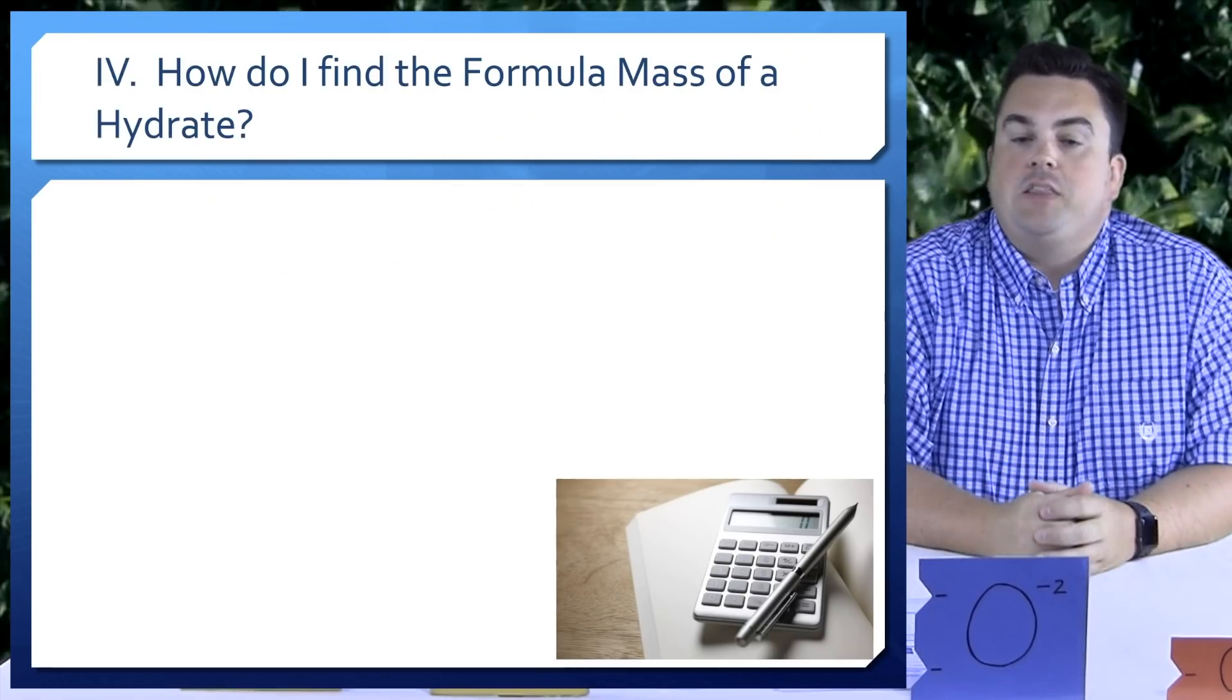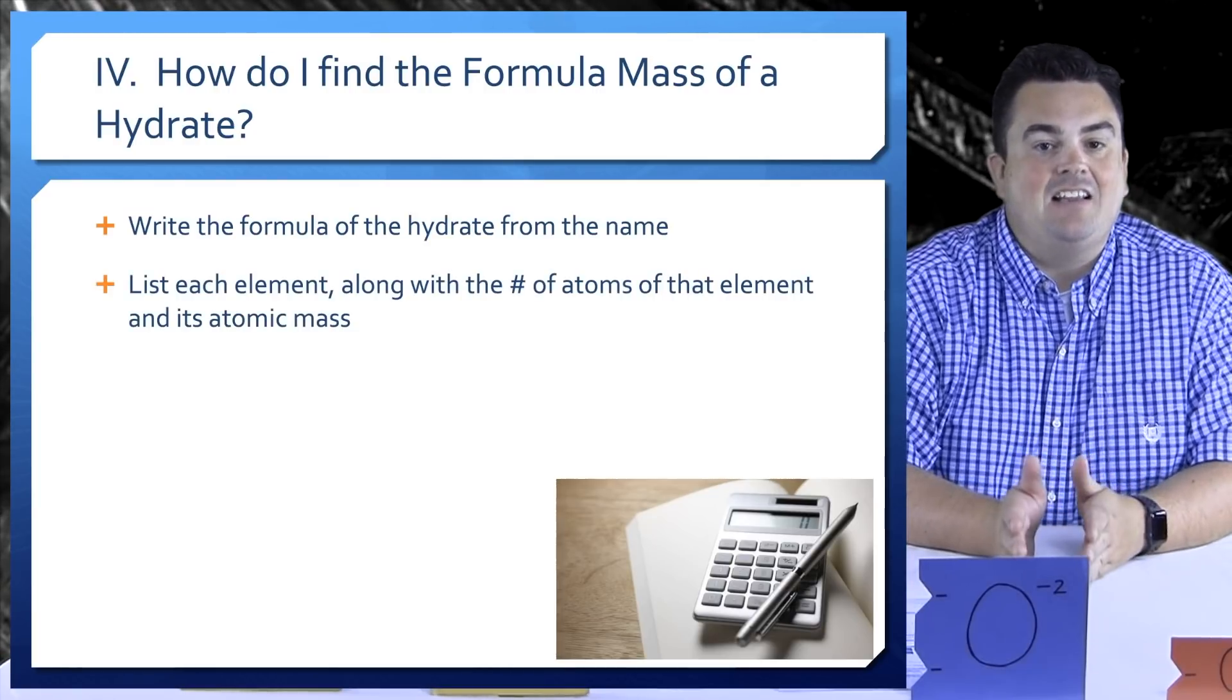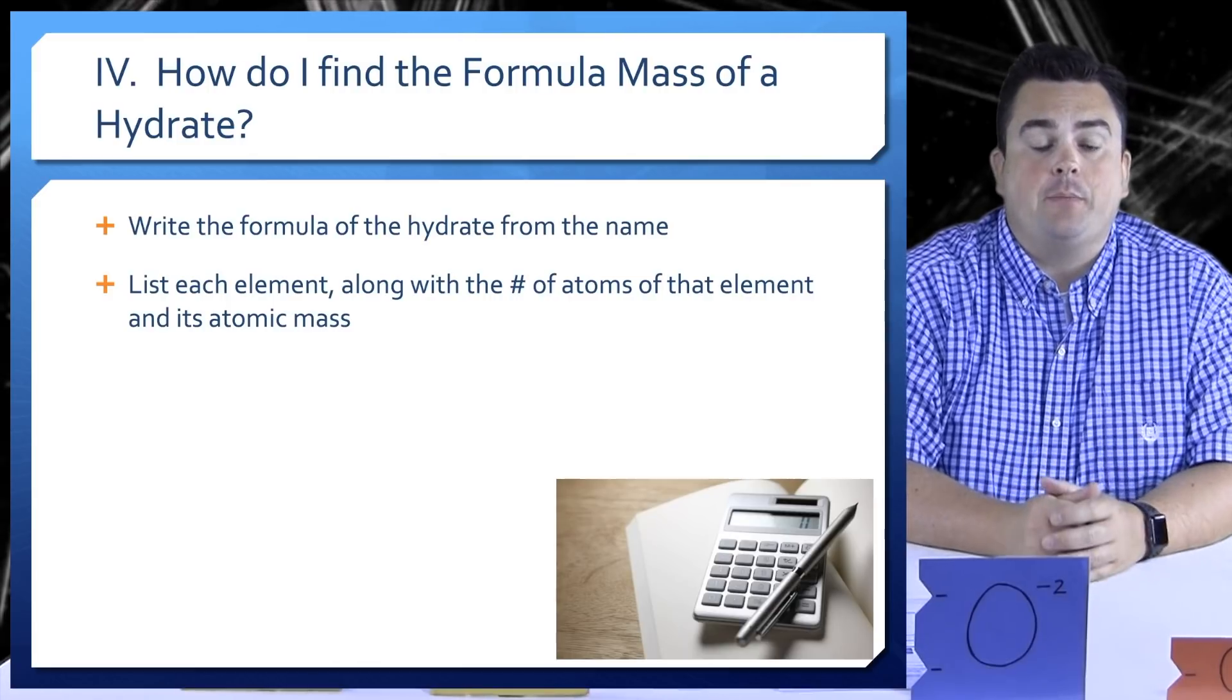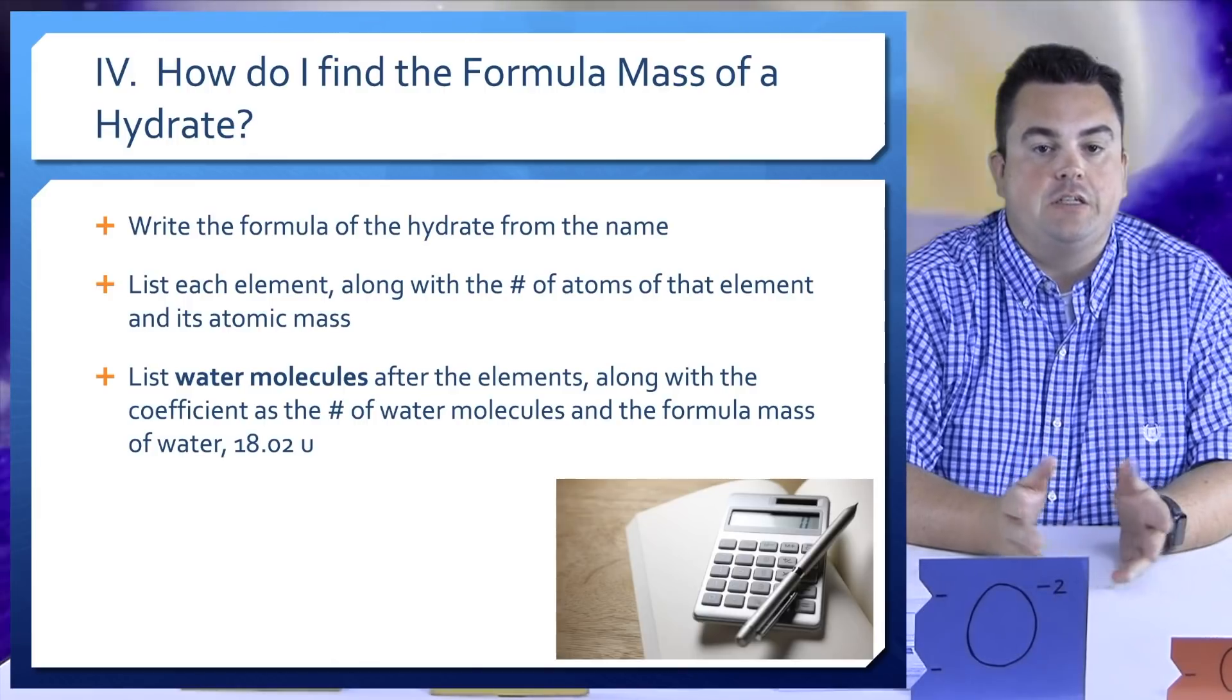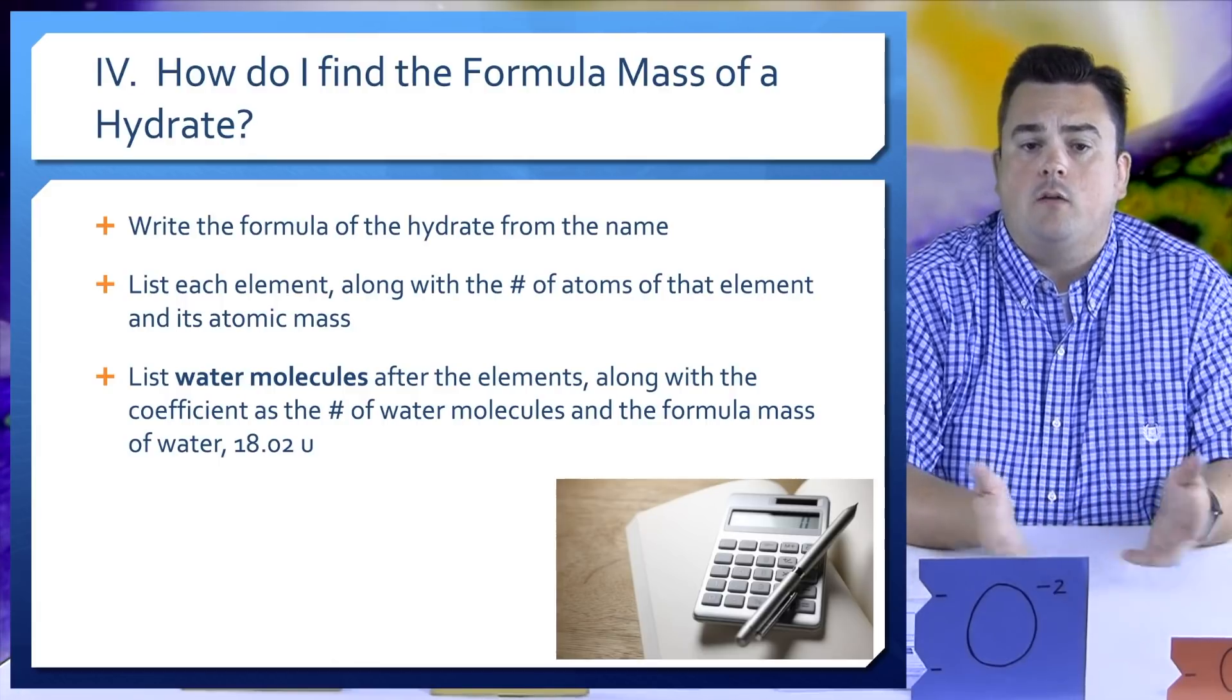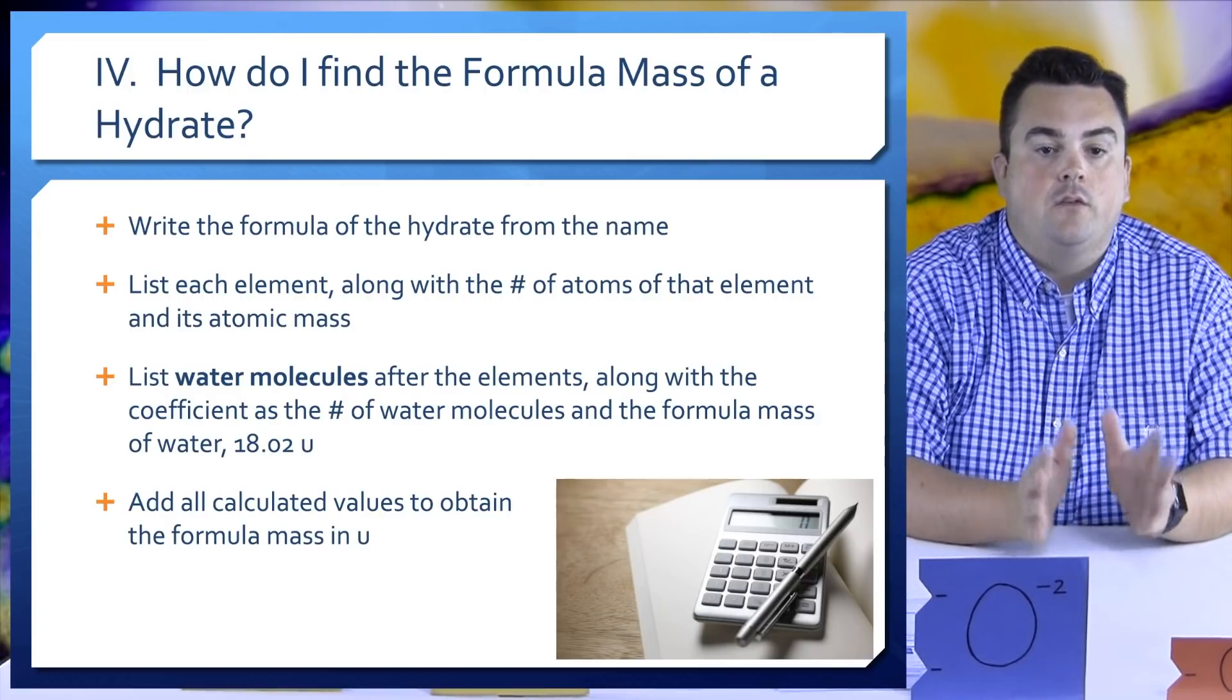How do I find the formula mass of a hydrate? You write the formula of the hydrate from the name. List each element along with the number of atoms of that element and its atomic mass. List water molecules after the elements along with the coefficient as the number of water molecules and the formula mass of water which is 18.02 U. Add all the calculated values to obtain the formula mass in U. Do not multiply!